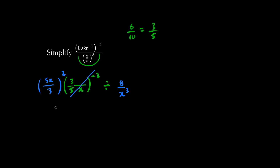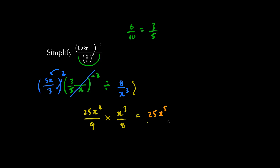So this becomes 5x and 3. We're going to square the top and the bottom, and we get 25x squared over 9. Then we change the division sign to multiplication by switching top and bottom, and simply multiply across. So we have 25x to the 5 all over 9 times 8, which is 72.